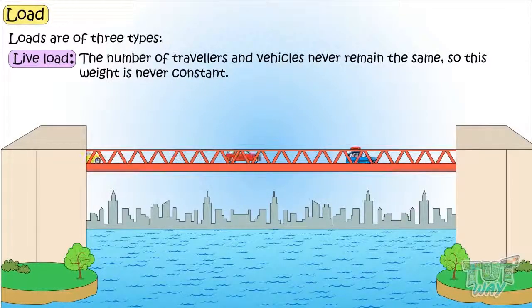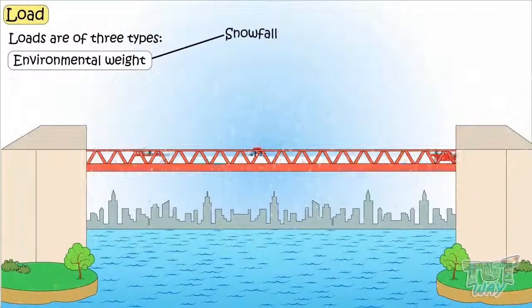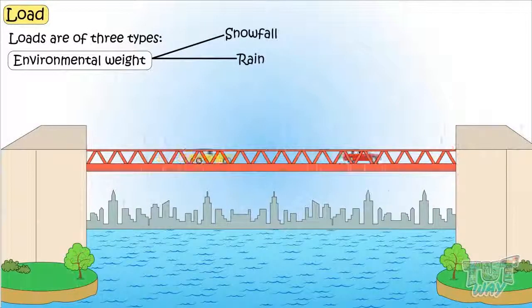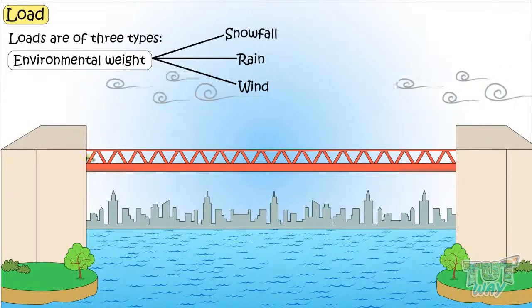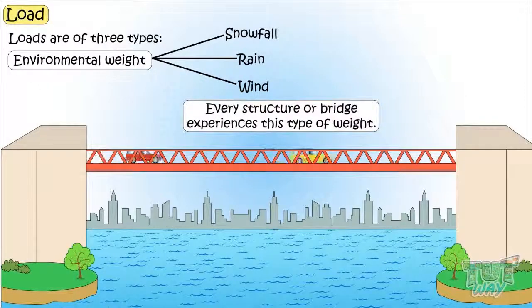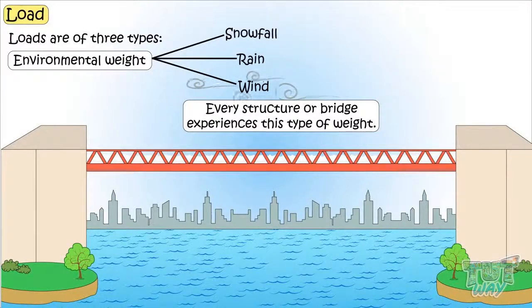There is also one more type of weight that does not remain constant, and it is environmental weight. Examples of environmental weight are snowfall, rain, and wind. Any structure or bridge experiences this type of weight — it can be the weight of rainfall, snowfall, or blowing wind — but it does not remain constant.